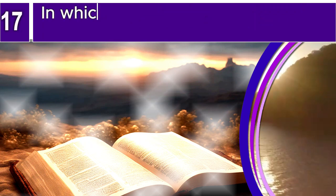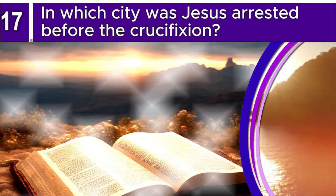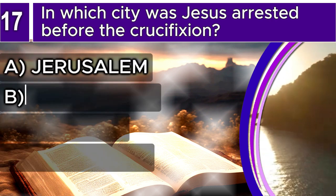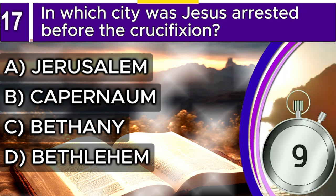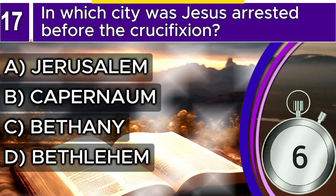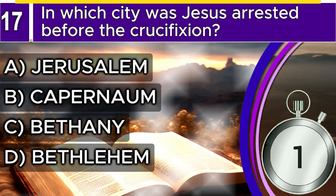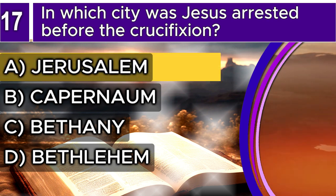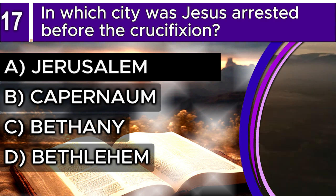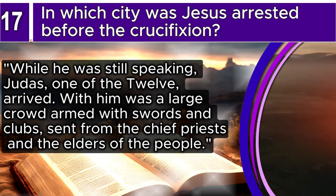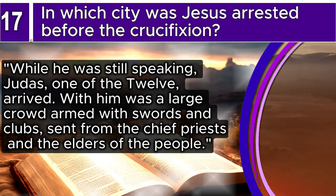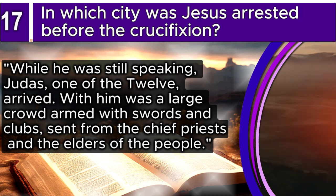Question 17. In which city was Jesus arrested before the crucifixion? A. Jerusalem, B. Capernaum, C. Bethany, D. Bethlehem. The correct answer is A. Jerusalem. Matthew 26, verses 47–48 says: While he was still speaking, Judas, one of the twelve, arrived. With him was a large crowd armed with swords and clubs, sent from the chief priests and the elders of the people.